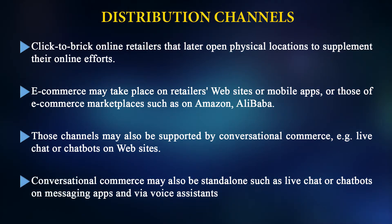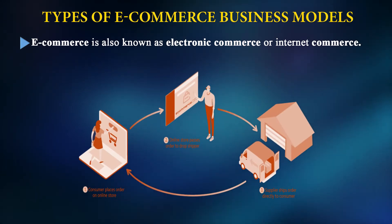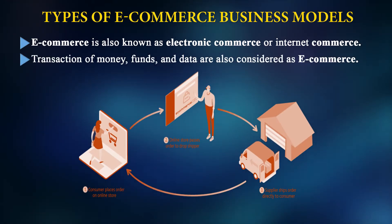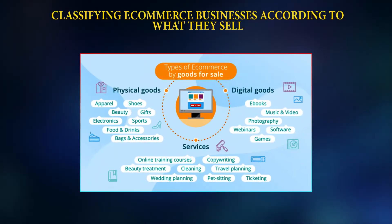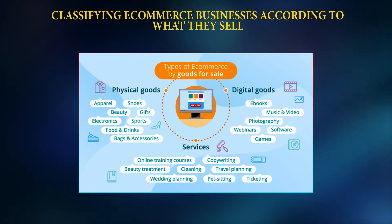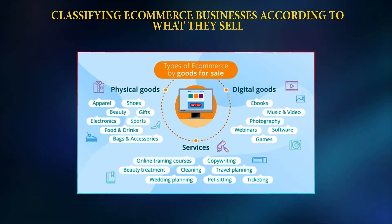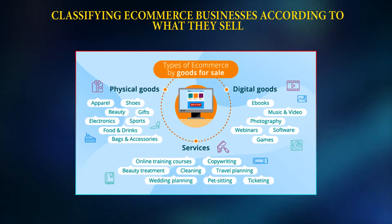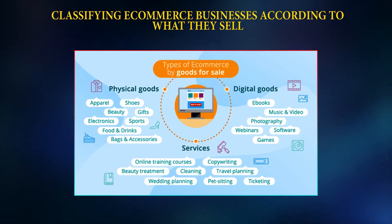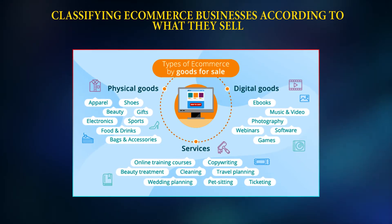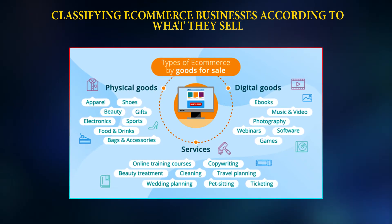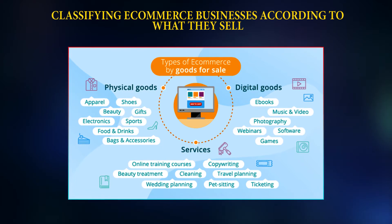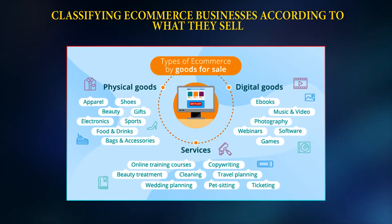Types of e-commerce business model: e-commerce, also known as electronic commerce or internet commerce, involves transactions of money, funds, and data. Classifying e-commerce businesses according to what they sell — physical goods on one side, digital goods on the other, and services in between. Physical goods include apparel, shoes, beauty, gifts, electronics, sports, food and drinks, bags and accessories. Digital goods include e-books, music and videos, photography, webinars, software, and games. Services include online training courses, travel planning, wedding planning, and ticketing — all of which have now transitioned largely to online mode.